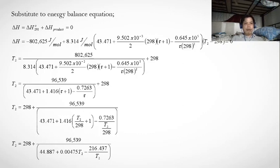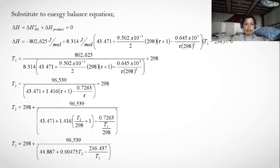Substituting into the energy balance gives: −802,625 J/mol + 8.314 × (43.471 + (9.502×10⁻³/2)×298×(τ+1) − (0.645×10⁵)/(τ·298²)) × (T₂ − 298) = 0. Solving, we obtain the iterative equation: T₂ = 298 + 96,539 / (44.887 + 0.00475·T₂ − 216.437/T₂).